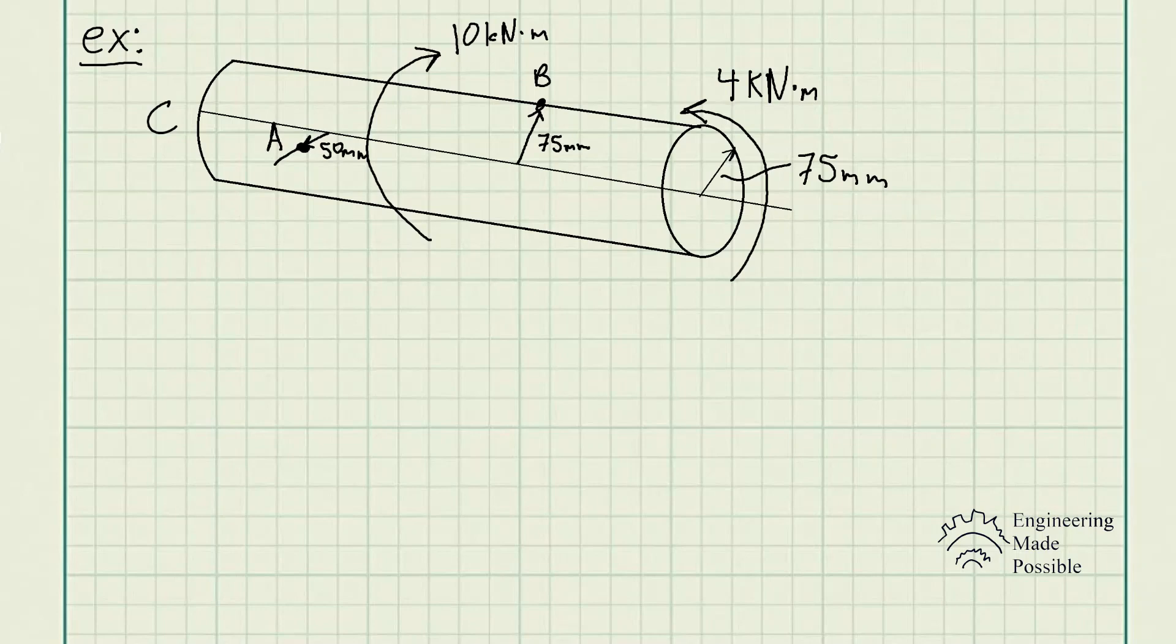The problem statement is the solid shaft is fixed to the support at C and subject to the torsional loading shown. Determine the shear stresses at point A and B.